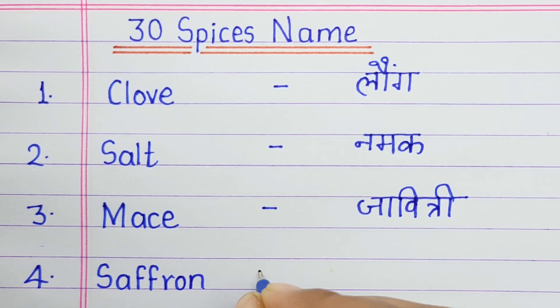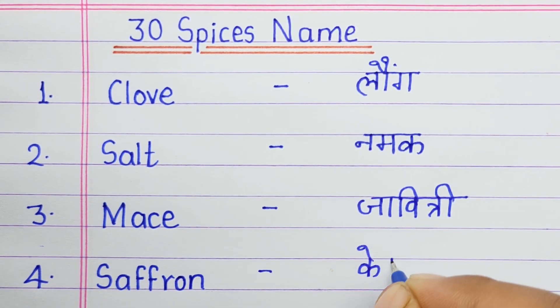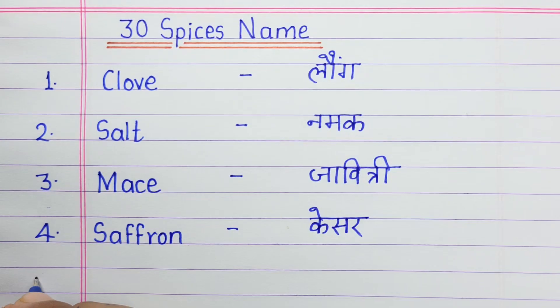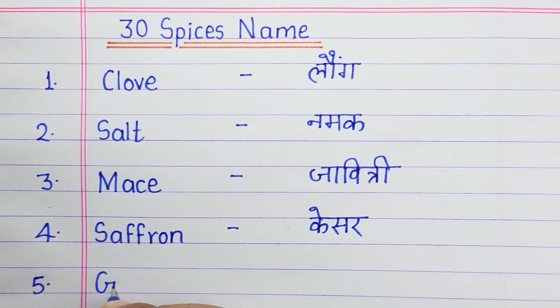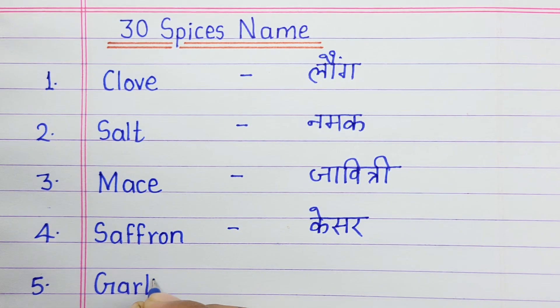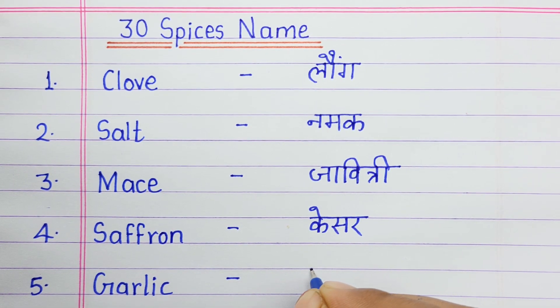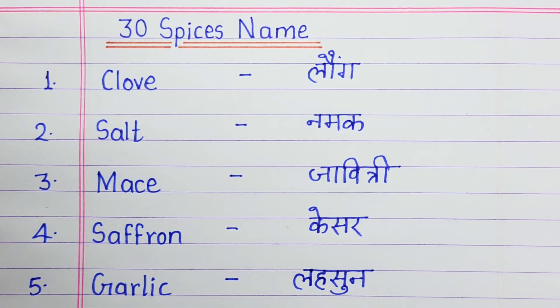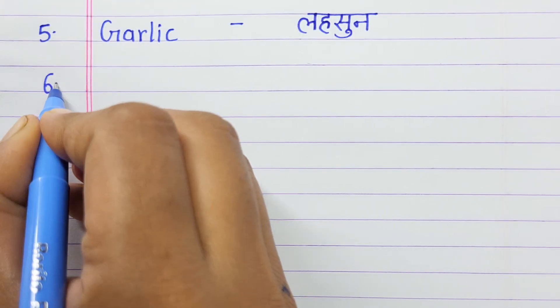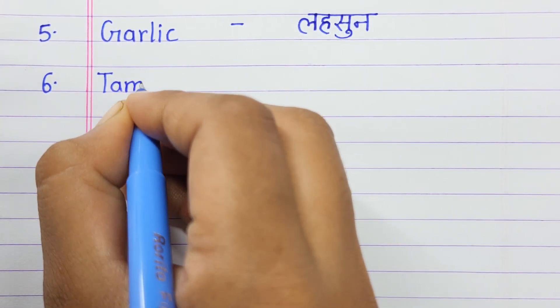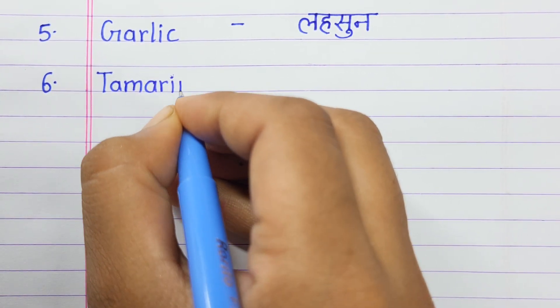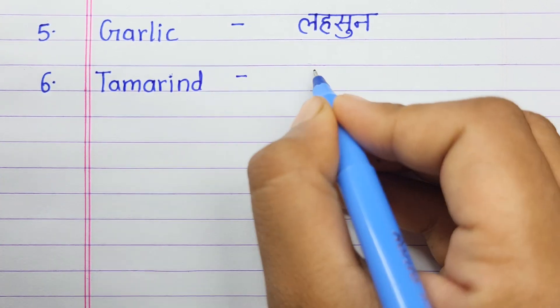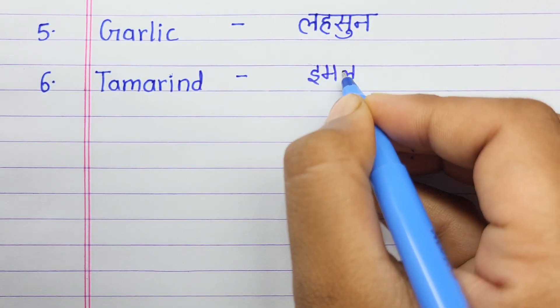Number four: Saffron means kesar. Number five: Garlic means lasun. Number six: Tamarind means imli.